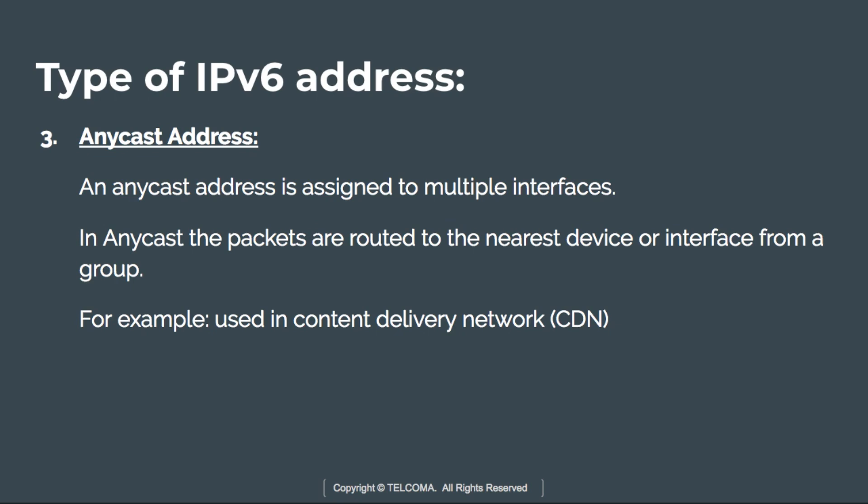Anycast is similar to multicast in that there is one sender and a group of destination devices. However, in anycast, the information is sent to the nearest device first, then routed to the next nearest device. In multicast, the same information is simultaneously sent to all users in the group, whereas anycast delivers sequentially to the nearest hop first. These are the key differences between multicast and anycast.